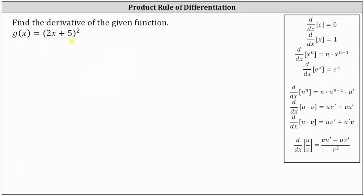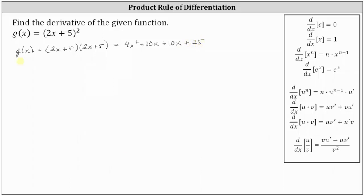Let's first square the quantity two x plus five. So g of x is equal to two factors of two x plus five. Multiplying two x times two x is four x squared, plus two x times five, which gives us plus 10 x, and then plus five times two x, giving us plus 10 x, and then plus five times five, giving us plus 25. Combining like terms, we have g of x equals four x squared plus 20 x plus 25.